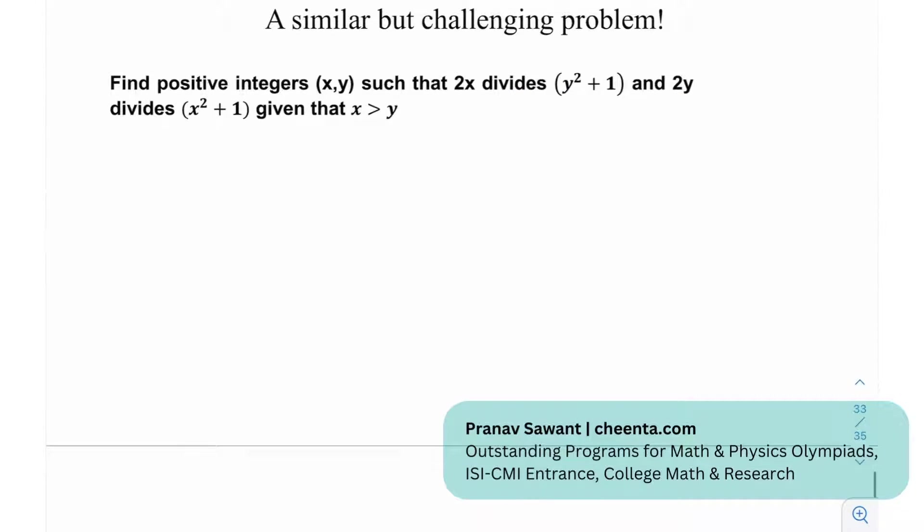At the end we have a similar but challenging problem. We need to find the positive integers x, y such that 2x divides y²+1 and 2y divides x²+1, given that x is greater than y. So a little bit of a symmetrical looking expression. So I'd really like you to try it out, and if you make any progress on it or if you get a solution, let me know in the comment section below.